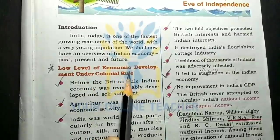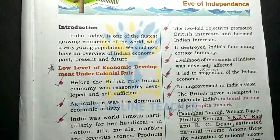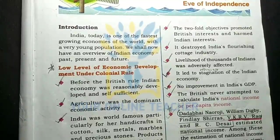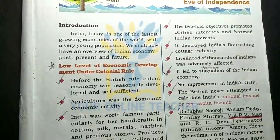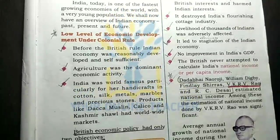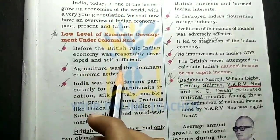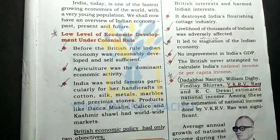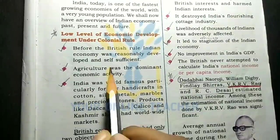Low level of economic development under colonial rule. The first chapter tells us that the Indian economy was at a very low level of development because it was not developed. Before the British rule, Indian economy was reasonably developed and self-sufficient.